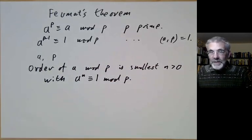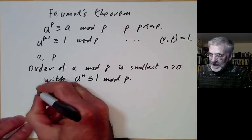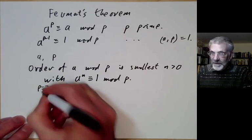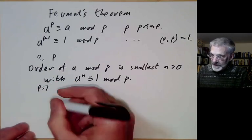So let's just work out the order of a few numbers. Let's take p equals 7 and try to work out the order of all numbers modulo 7.